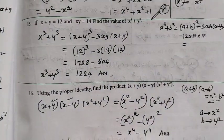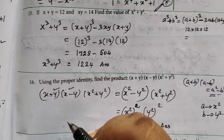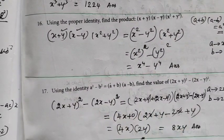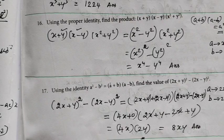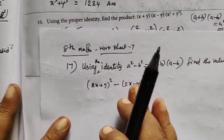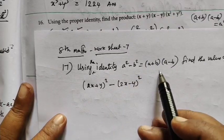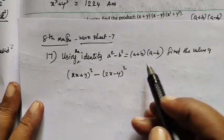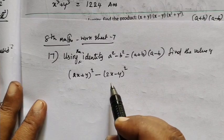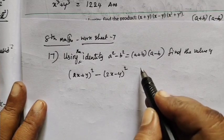Question No. 17. Using identity a square minus b square equal to a plus b into a minus b, find the value of 2x plus y whole square minus 2x minus y whole square.